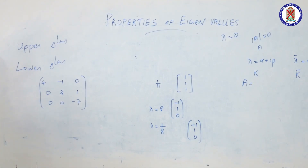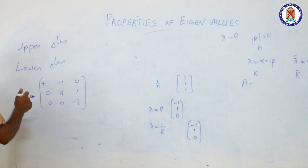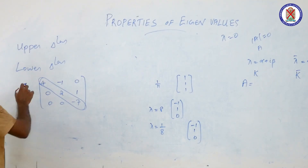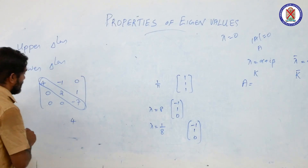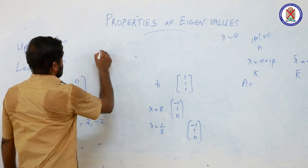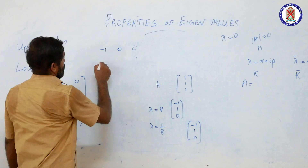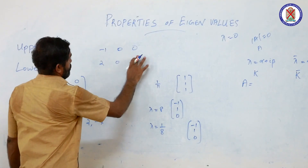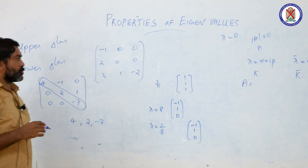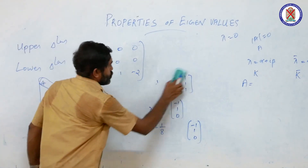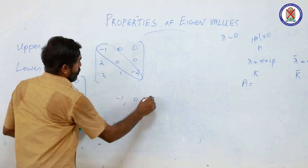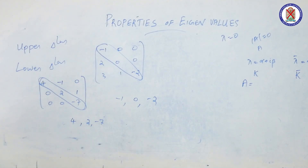For example, an upper triangular matrix has eigenvalues equal to its diagonal elements, which are 4, 2, and −7. Similarly, a lower triangular matrix also has eigenvalues equal to its diagonal elements, giving eigenvalues −1, 0, and −2.